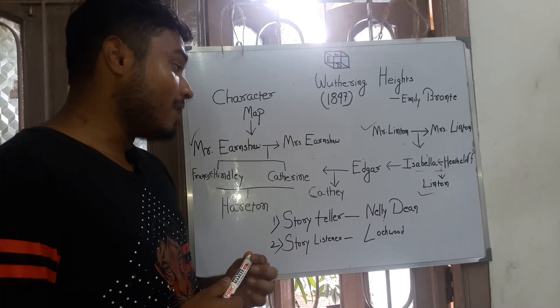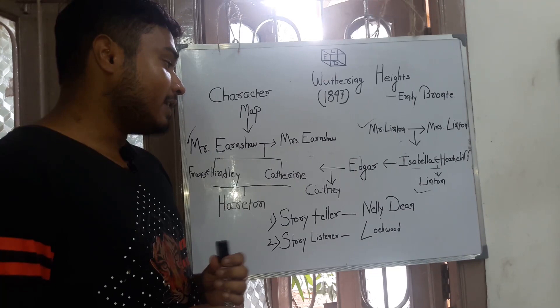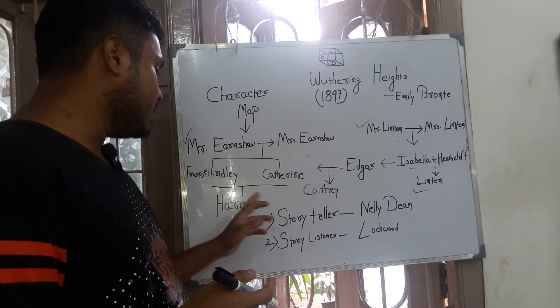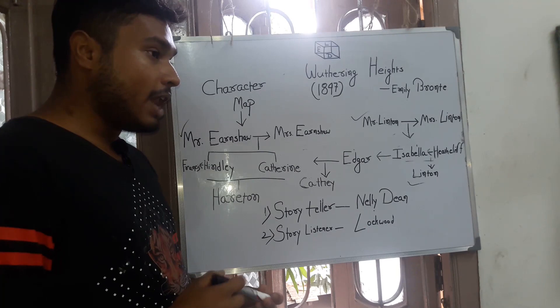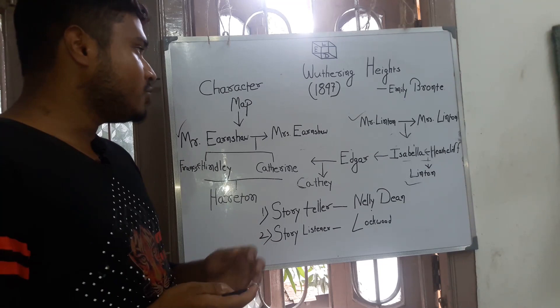Linton dies, leaving Cathy completely alone. This aloneness is eventually filled by Hareton, and Hareton and Cathy marry each other. Through this reconciliation of Cathy and Hareton, the morality and ideals of the two houses — Wuthering Heights and Thrushcross Grange — are finally reunited.